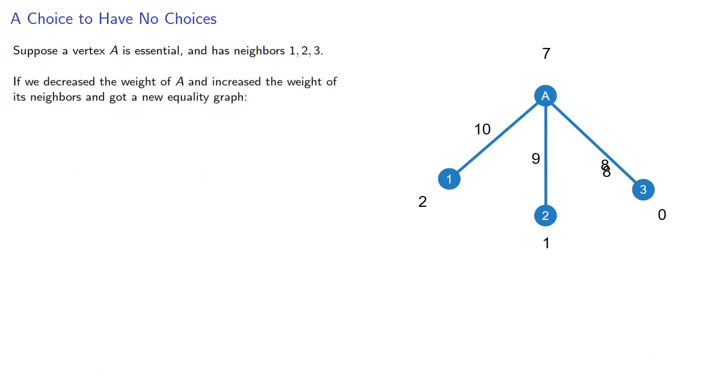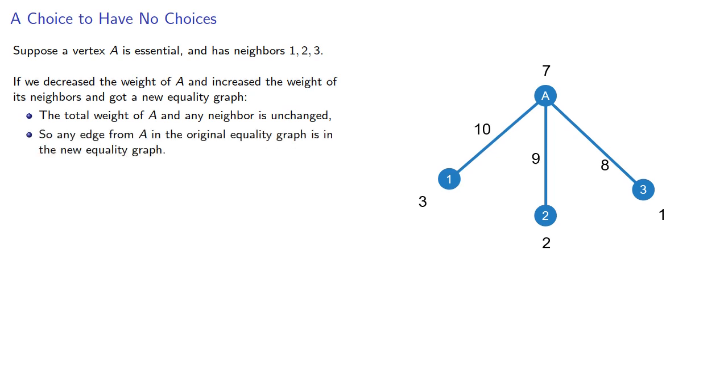So let's consider. Suppose vertex A is essential and has neighbors 1, 2, and 3. If we decrease the weight of A and increase the weight of its neighbors and got a new equality graph, the total weight of A and any neighbor is unchanged. So any edge from A in the original equality graph is in the new equality graph. Moreover, since the weight of A has decreased, we might get additional edges. So A might have even more choices.